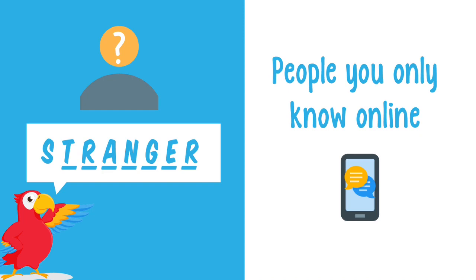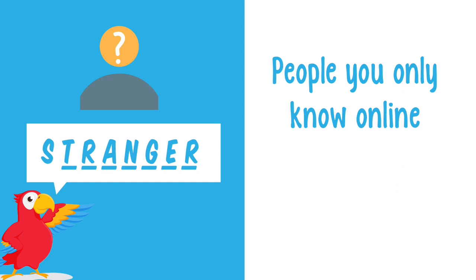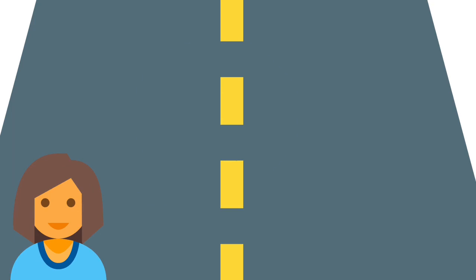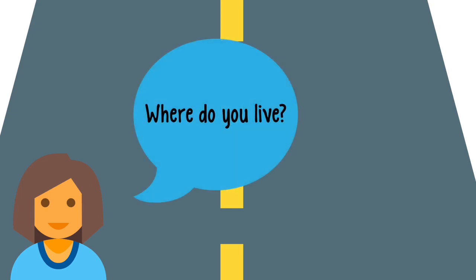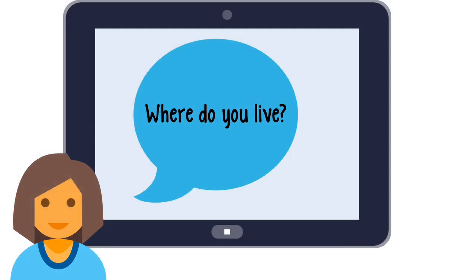Now we know there are lots of ways you can end up talking to strangers online. You might message someone who works for a company to ask a question or for help with a job or task. You might play a game with someone online and talk about the game. But it doesn't matter how we are talking to these people, or even whether they seem friendly and kind — we always need to think carefully about what we share with them. Personal information that could be used to work out who we are or where we come from needs to be kept safe and private.